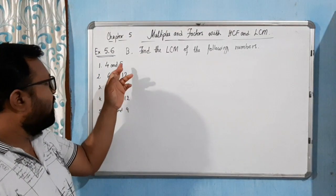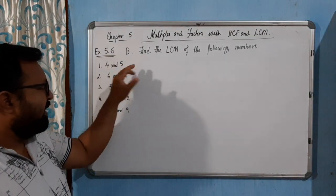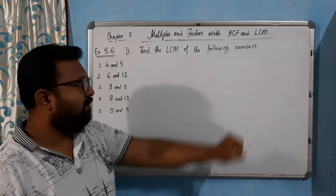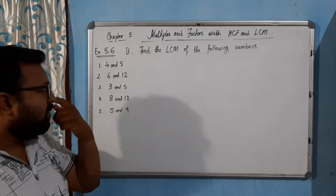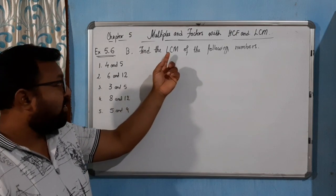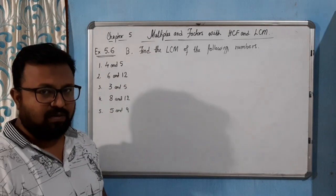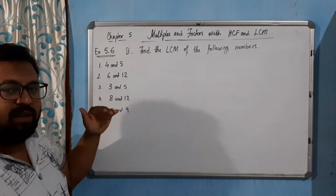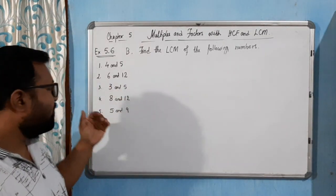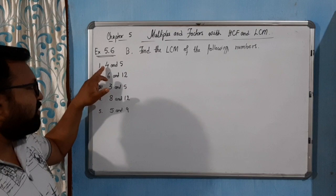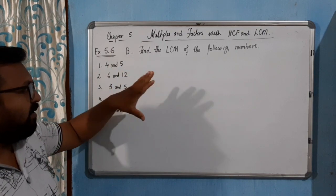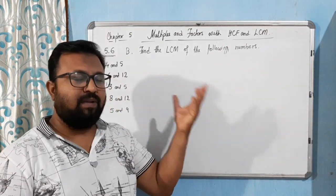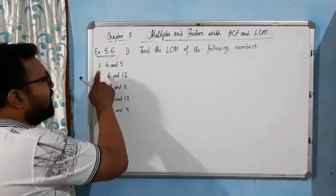Hello students, now we come to the last question of the exercise: find the LCM — the Lowest Common Multiple. We will try to find all the multiples and then find the common multiple, and the lowest one will be the Least Common Multiple. I have taken five examples, and we will find the multiples of the given numbers.